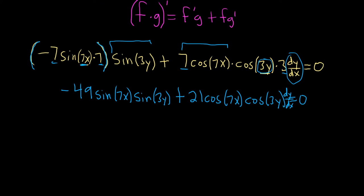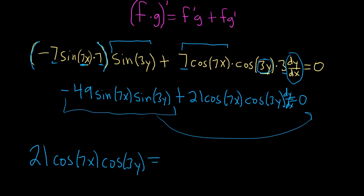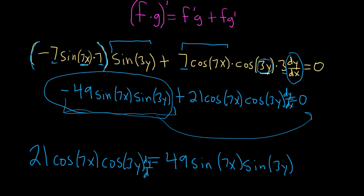Now let's go ahead and add this whole piece here to the right-hand side. We're just going to take it over there. So we have 21 cosine 7x cosine 3y, and this is equal to 49 sine 7x sine 3y. Just taking this and adding it to the right-hand side. Oh and I forgot again the dy/dx. That piece keeps hanging out.